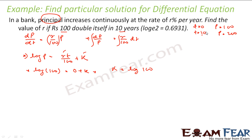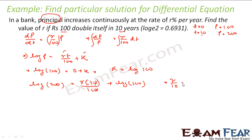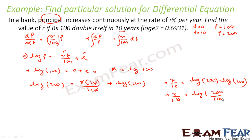Now putting t = 10, p = 200: log 200 = r·10/100 + log 100, so r/10 = log 200 − log 100 = log(200/100) = log 2. Since log 2 = 0.6931, we get r = 10 × 0.6931 = 6.931. So r is approximately 6.931 percent, and that is the answer.